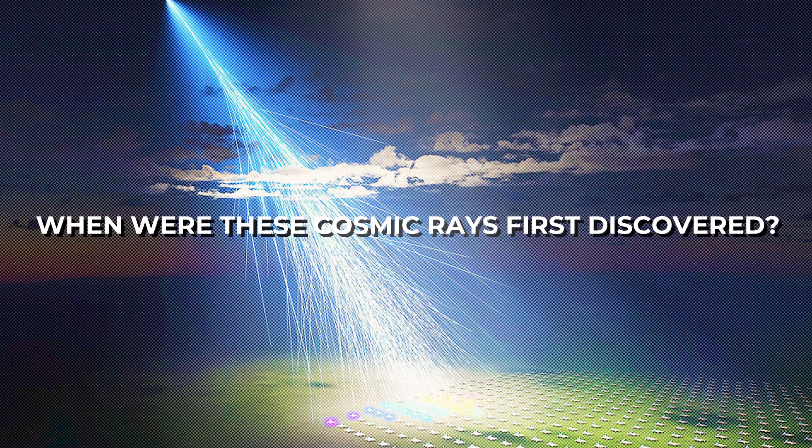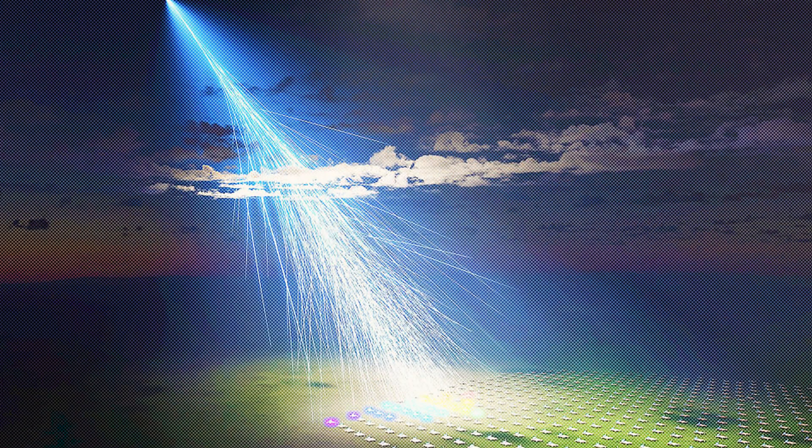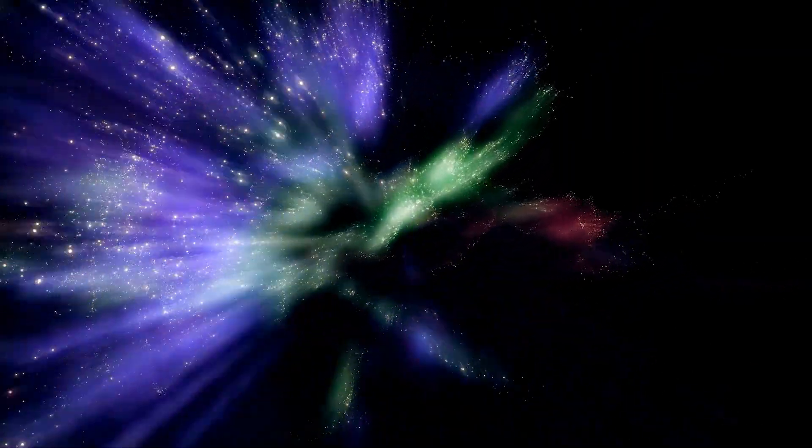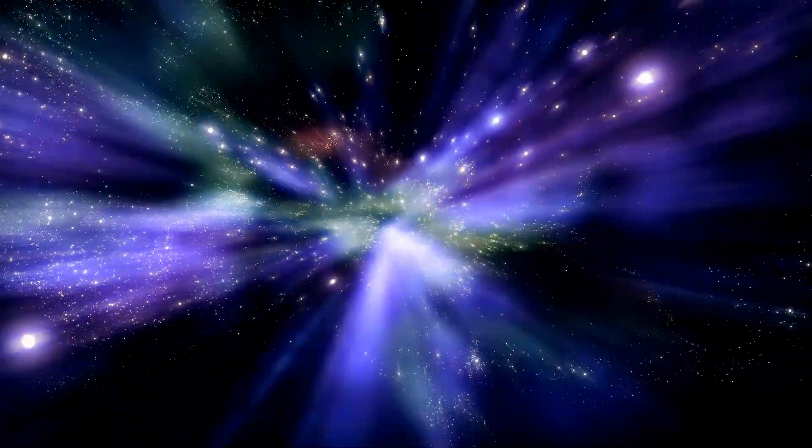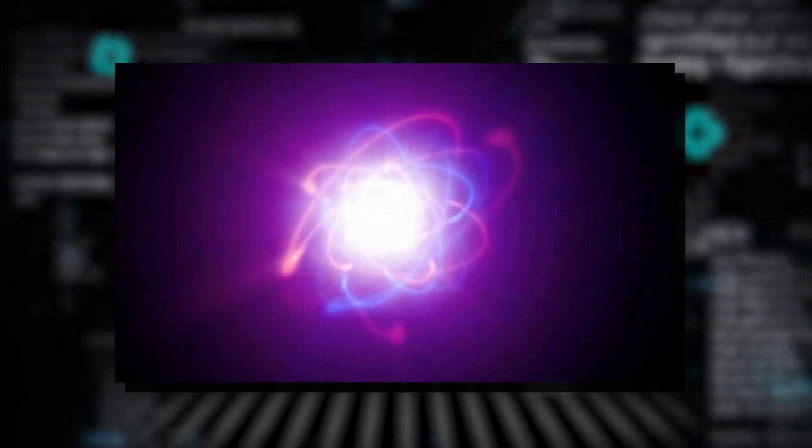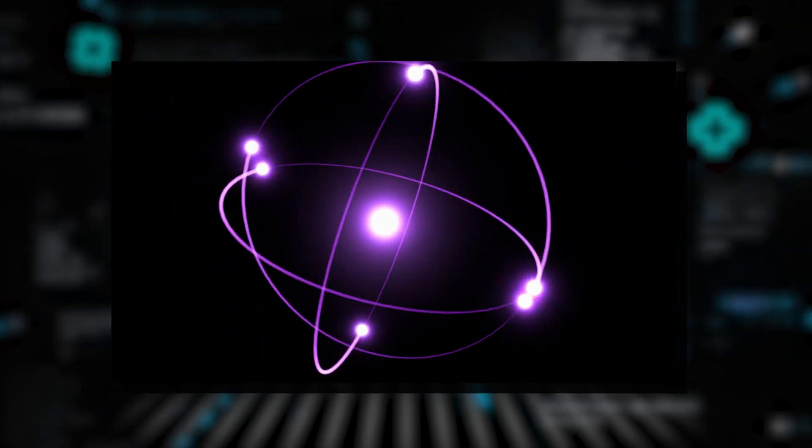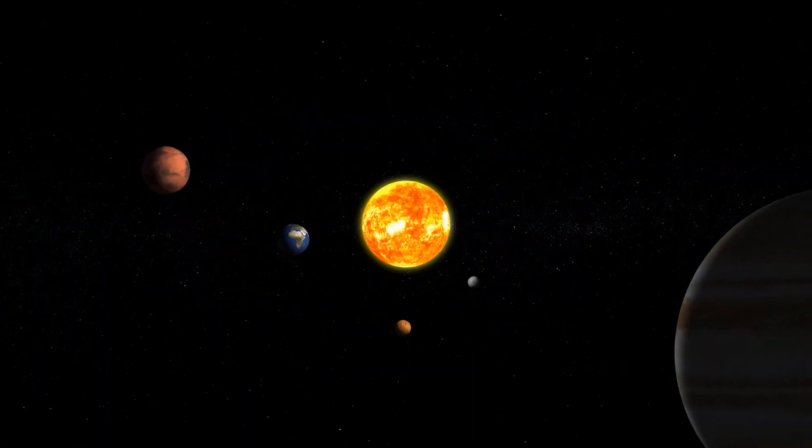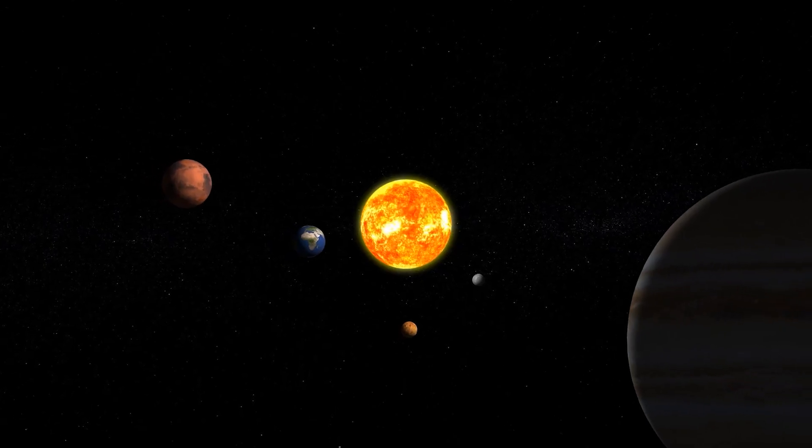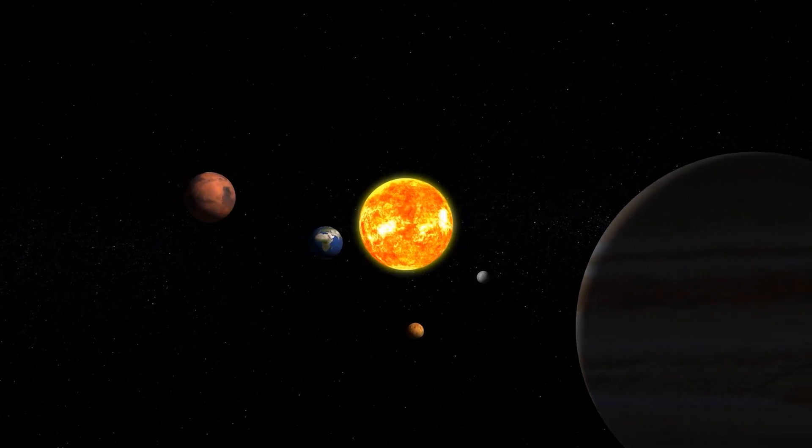When were these cosmic rays first discovered? Cosmic rays are super-energetic tiny particles zooming through space at almost the speed of light. Essentially, they're just atomic nuclei of protons or clusters of protons and neutrons. While many come from the sun, some originate from things outside our solar system.